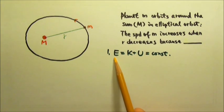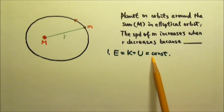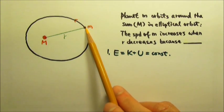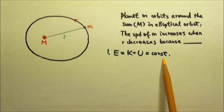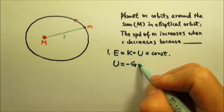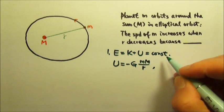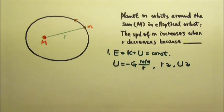First, we can take an energy approach. The total mechanical energy K plus U of the planet is a constant because there is no air resistance or friction to take mechanical energy away, so the mechanical energy should be conserved. The gravitational potential energy is negative GMm over r. So when r decreases, the potential energy would decrease.